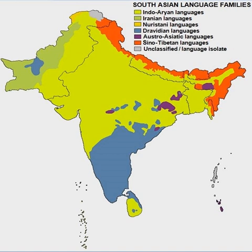Modern spoken Tamil also shows a number of sound changes, in particular a tendency to lower high vowels in initial and medial positions, and the disappearance of vowels between plosives and between a plosive and rhotic. Contact with European languages also affected both written and spoken Tamil. Changes in written Tamil include the use of European-style punctuation and the use of consonant clusters not permitted in Middle Tamil. The syntax of written Tamil has also changed, with the introduction of new aspectual auxiliaries and more complex sentence structures, and with the emergence of a more rigid word order resembling the syntactic argument structure of English.